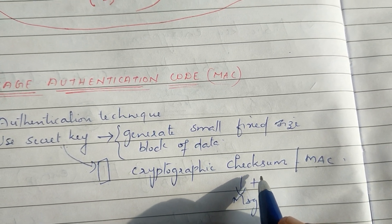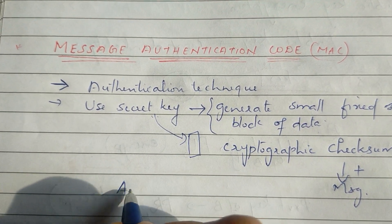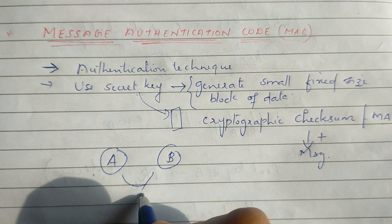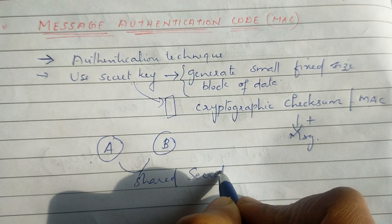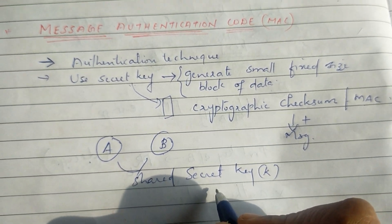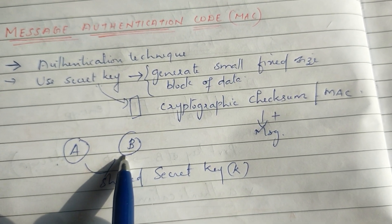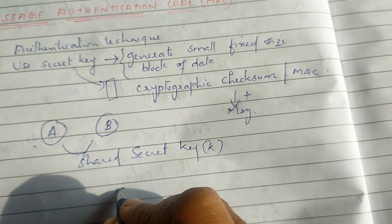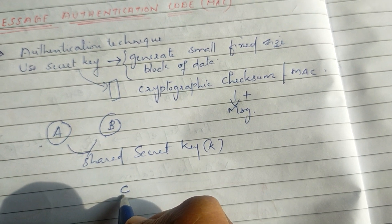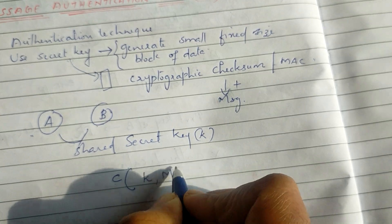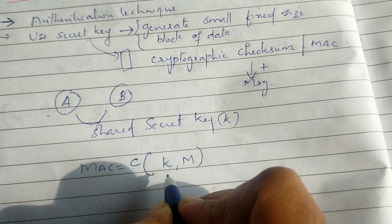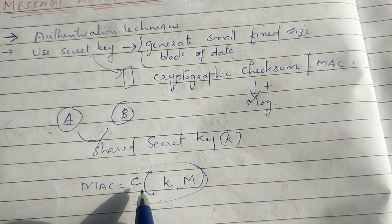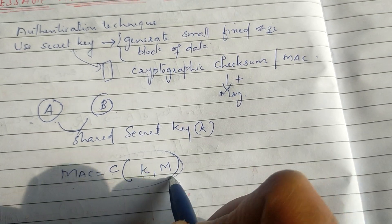We use the MAC method. The MAC function is denoted C, and it is a function of a key and a message. We can also transmit a MAC along with our message. If you want to send to a destination, the MAC will be calculated using the shared secret key and the input message.